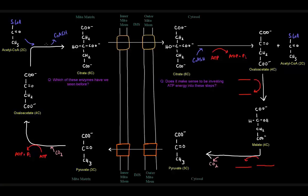Linking acetyl-CoA and oxaloacetate together is done by an enzyme called citrate synthase, which we've actually seen before — in the TCA cycle. It's the first step of the TCA cycle.